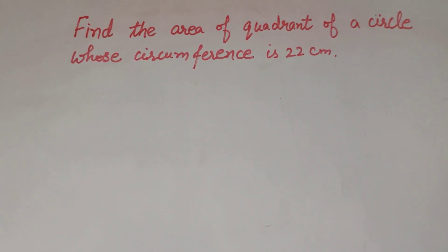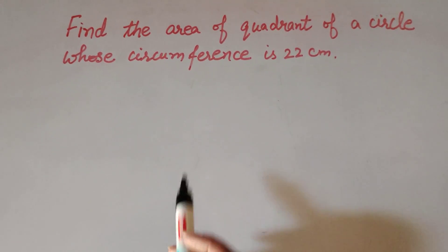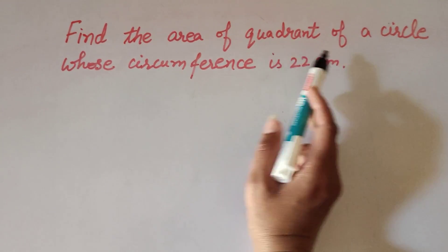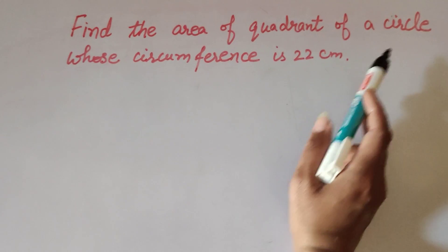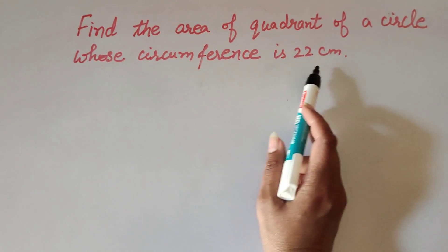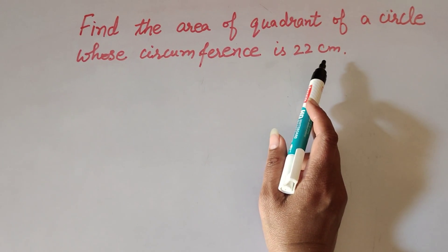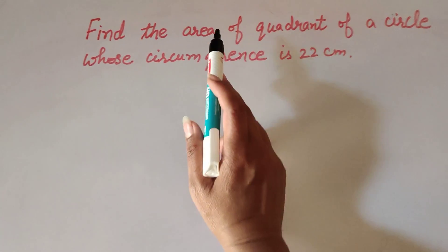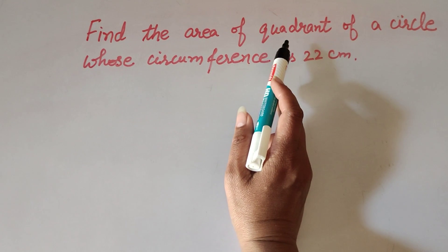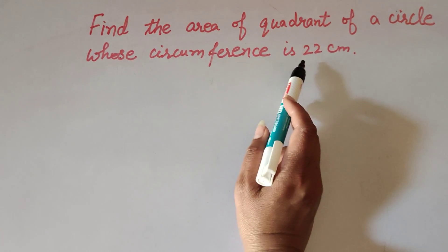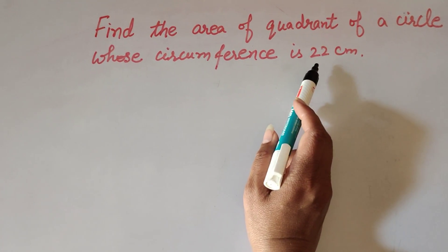Hello friends, welcome to my channel. In this video we discuss finding the area of a quadrant of a circle whose circumference is 22 cm. In this question we find the area of the quadrant whose circumference is given.